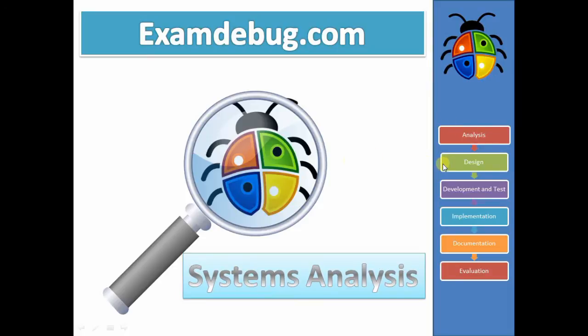So first of all, you're going to have to know the six stages: analysis, design, development and testing, implementation, documentation, and evaluation. So you're going to have to know them, you're going to have to know them in order. Analysis, obviously you have to know, in short, what each stage is about.